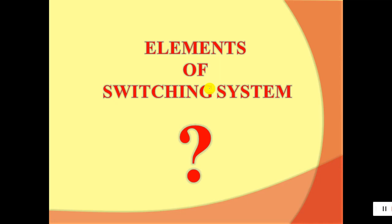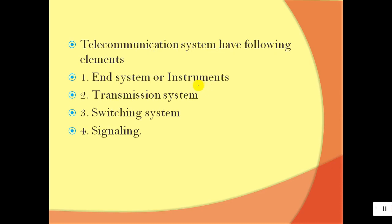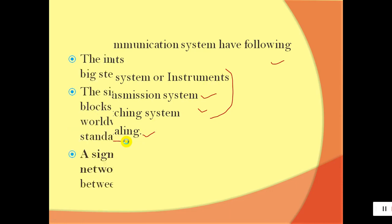The elements of a switching system — as seen in its definition — are: first, an instrument or end system like a telephone or handset by which we receive or transmit messages; second, the transmission system by which signals propagate; third, the switching system itself; and fourth, signaling — which is the topic we are going to cover.